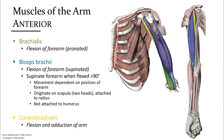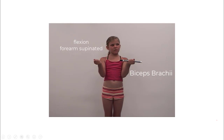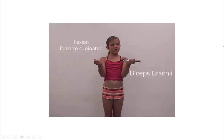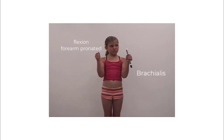Beneath the biceps brachii is a much larger muscle, the brachialis, shown in green. Brachialis also flexes the forearm, but it's the prime mover when the forearm is in the pronated position — in the gym, these are known as hammer curls. Coracobrachialis is a small muscle along the long head of the biceps brachii that aids in flexion and adduction of the arm. Here we can see the action of the biceps brachii with the forearm in the supinated position, and when the forearm is pronated, the brachialis is the main muscle that will flex the forearm.